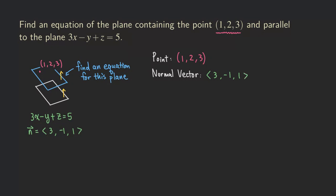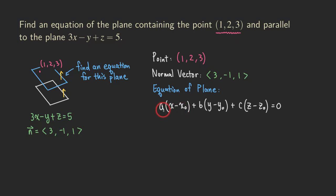Now we have everything we need. We need a point, which is already given: 1, 2, and 3. And we need the normal vector, which is 3, negative 1, and 1. Let's write down the equation of the plane using the formula: a(x − x₀) + b(y − y₀) + c(z − z₀) = 0, where a, b, c are the components of the normal vector and x₀, y₀, z₀ are the coordinates of the point.